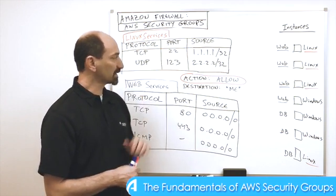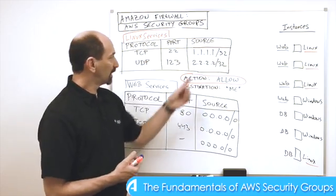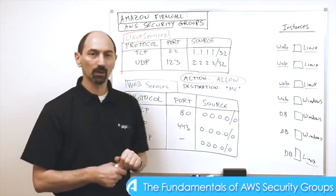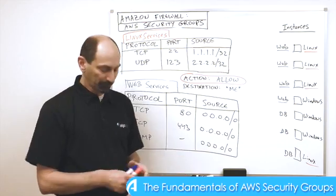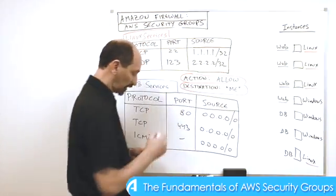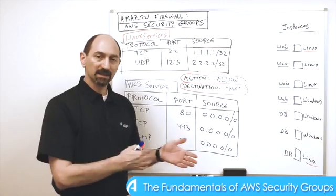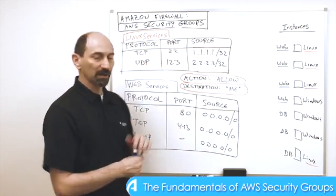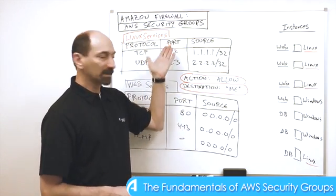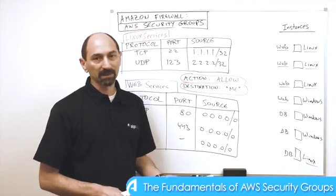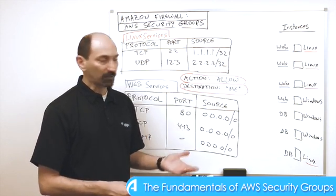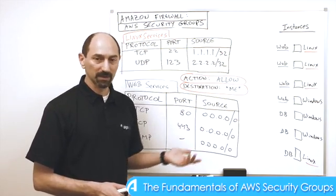The second thing that's missing is the destination. There's a source where the traffic is allowed to come from — in this case from 1.1.1.1 — but there's no destination. The reason is that in the AWS firewall, the destination is always 'me': it is always the instance on which this particular security group is applied to.